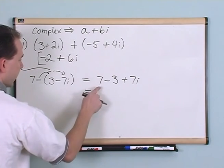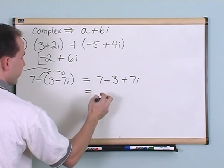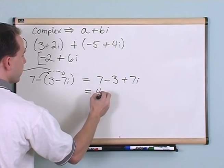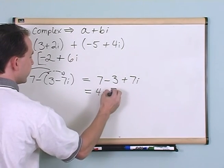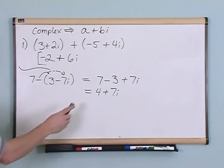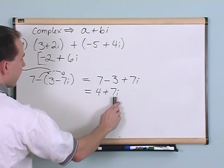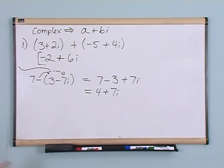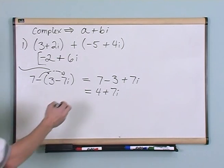And then finally, I just add the real numbers together. 7 minus 3 gives me 4. And then I still have my plus 7i left over. And I can't do anything more with this because now I have a real part, I have an imaginary part, and I can't add them anymore. So this would be the answer.